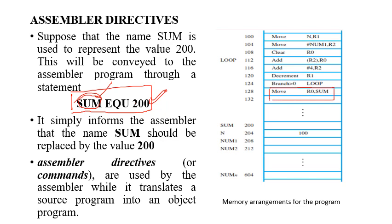For example, 'MOVE R0, sum' — here sum is nothing but 200. What happens is: MOVE copies the content of R0 to sum, and since sum represents address 200, the content of R0 is copied to the memory location pointed by address 200. This simply informs the assembler that the name sum has to be replaced by the value 200 whenever the assembly language program is assembled to the object program. The assembler just replaces the name sum with 200.